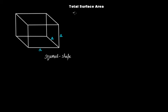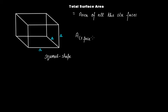The total surface area of a cube is equal to the area of all six faces. Since each face is a square shape and each face is identical — congruent — we find the area of one face and multiply it by six. The area of one face is a × a = a², so six times that gives us 6a².